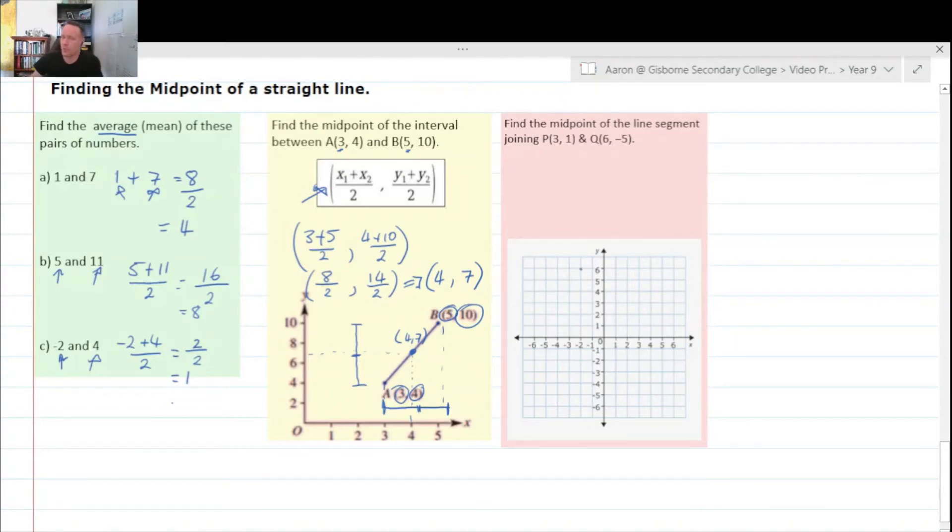Okay, again up here we can do the same thing, and it's asking us, let's draw the line first. So we've got point P is three one, three one, and then we've got point Q, which is six negative five.